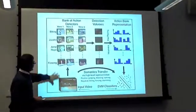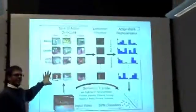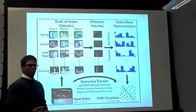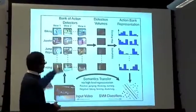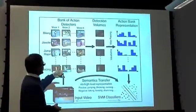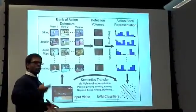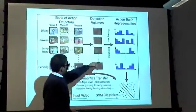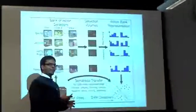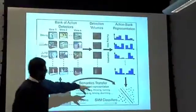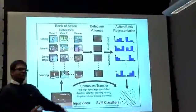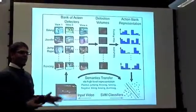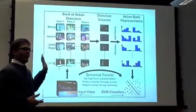An input video goes through each of the action detectors in the action bank, giving you a bunch of detection volumes — the correlation surfaces. From each of these correlation volumes, we pick out the most important and most contributive values. All of these values concatenated together give you one feature representation which is used by the SVM. This is the whole of action bank in one image.